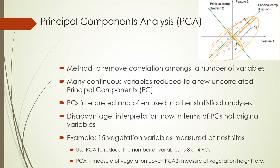The disadvantage is that if you do find a difference, you have to interpret it on the principal component, not on the original variables. You could run a principal components analysis, find three or four PCA factors, and then ask if there's a difference in those PCA factors among the groups you're comparing. You have correlations between the principal components and the original variables that help you understand what those principal components mean, but they're still one additional step away from the actual measurements taken on the ground.